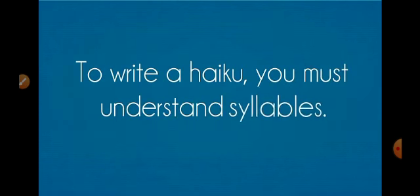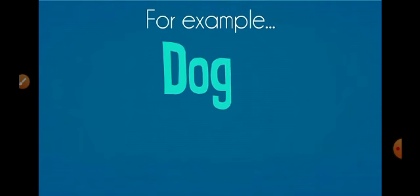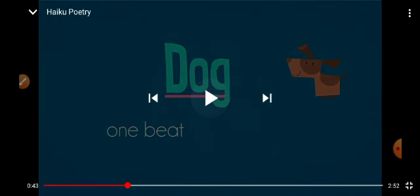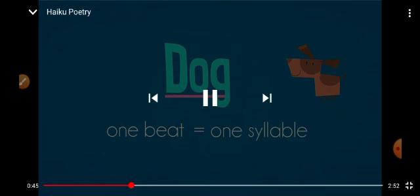To write a Haiku you must understand syllables. So what are these syllables? A syllable is a part of a word that has one beat or sound. For example, dog. If we pronounce this word we say dog in one go—there is only one syllable, only one beat.